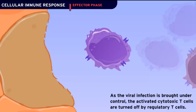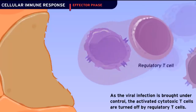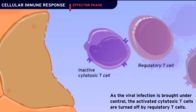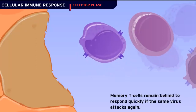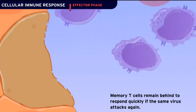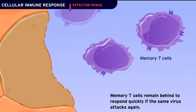As the viral infection is brought under control, the activated cytotoxic T cells are turned off by regulatory T cells. Memory T cells remain behind to respond quickly if the same virus attacks again.